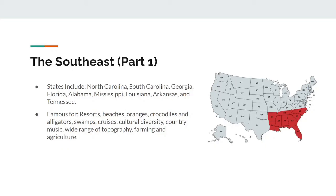The Southeast is really huge, which is why it needs two slides to cover. States here include North Carolina, South Carolina, Georgia, Florida, Alabama, Mississippi, Louisiana, Arkansas, and Tennessee. It's famous for its resorts, beaches, oranges, crocodiles and alligators, swamps, cruises, cultural diversity, country music, a wide range of topography, farming, and agriculture.